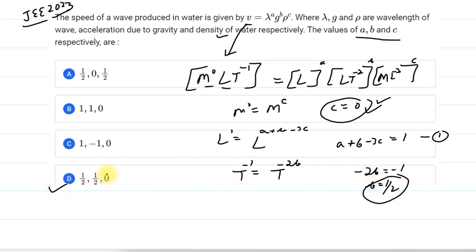And I hope the answer will be D. Because B is half and C is zero. So this option is forming. But we'll solve for A also.